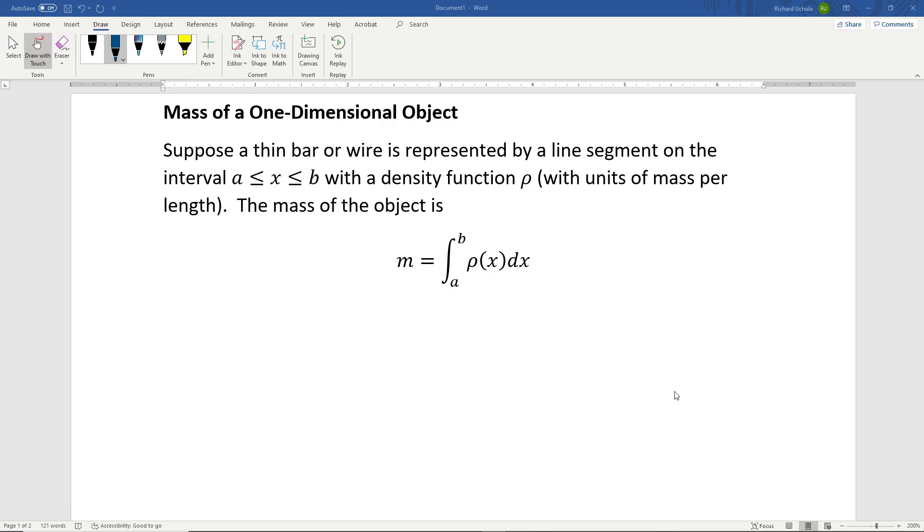An object with uniform mass satisfies the basic relationship that mass equals density times volume. But if the density of the object varies, then we must use calculus to determine the mass of the object.